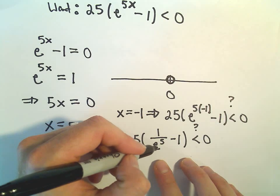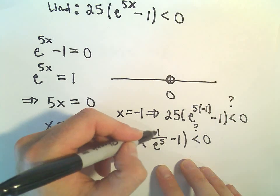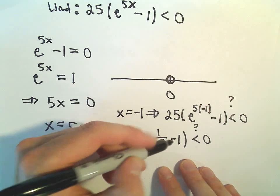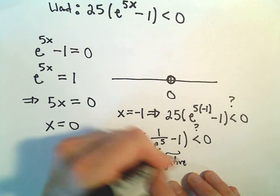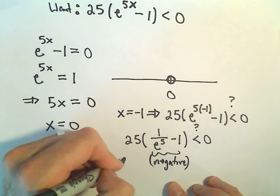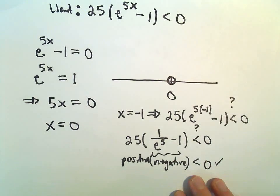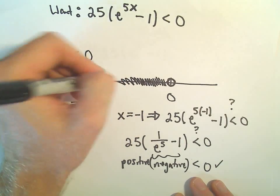Since 25 is positive, the idea really is, is 1 over e to the 5th minus 1 negative? And definitely it's going to be, e to the 5th is, you can think about e as being kind of close to 3. So if you took 1 over 3 to the 5th, 3 to the 5th is a pretty big number, 1 over that minus 1. This is certainly going to be negative. In that case, we would have a positive times a negative, and that is going to be less than 0. So anything to the left of 0 would work.